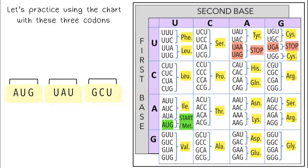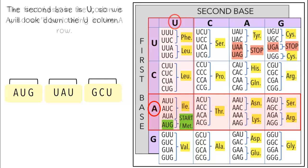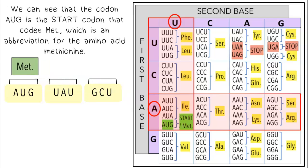Let's practice using the chart with these three codons. The first base in the codon is A, so we'll be looking in the A row. The second base is U, so we will look down the U column. We can see that the codon AUG is the start codon that codes for MET, which is an abbreviation for the amino acid methionine.